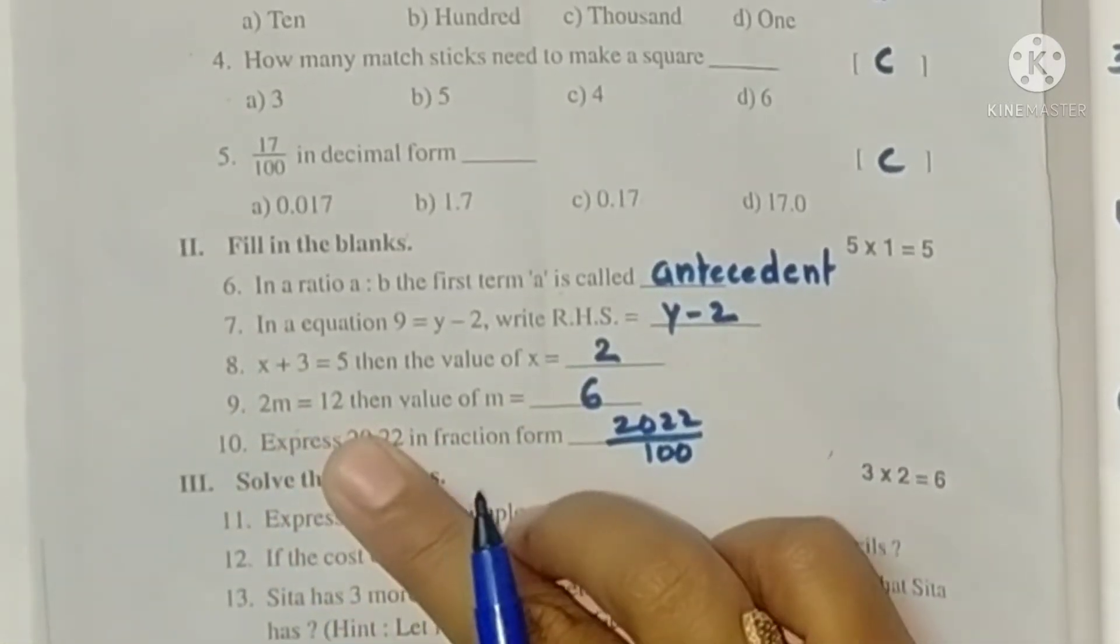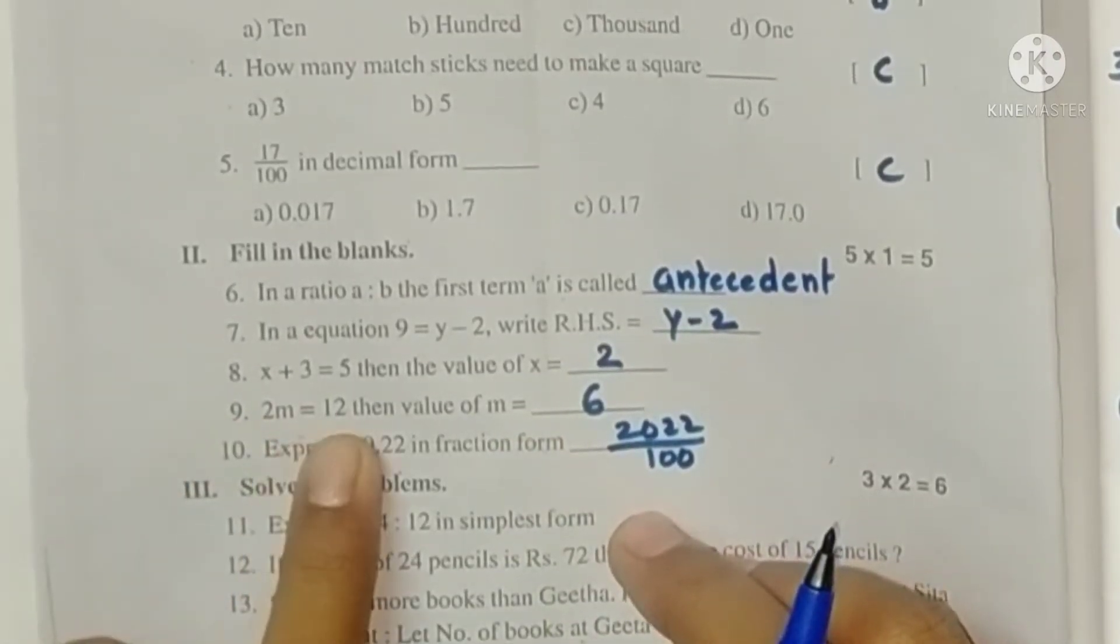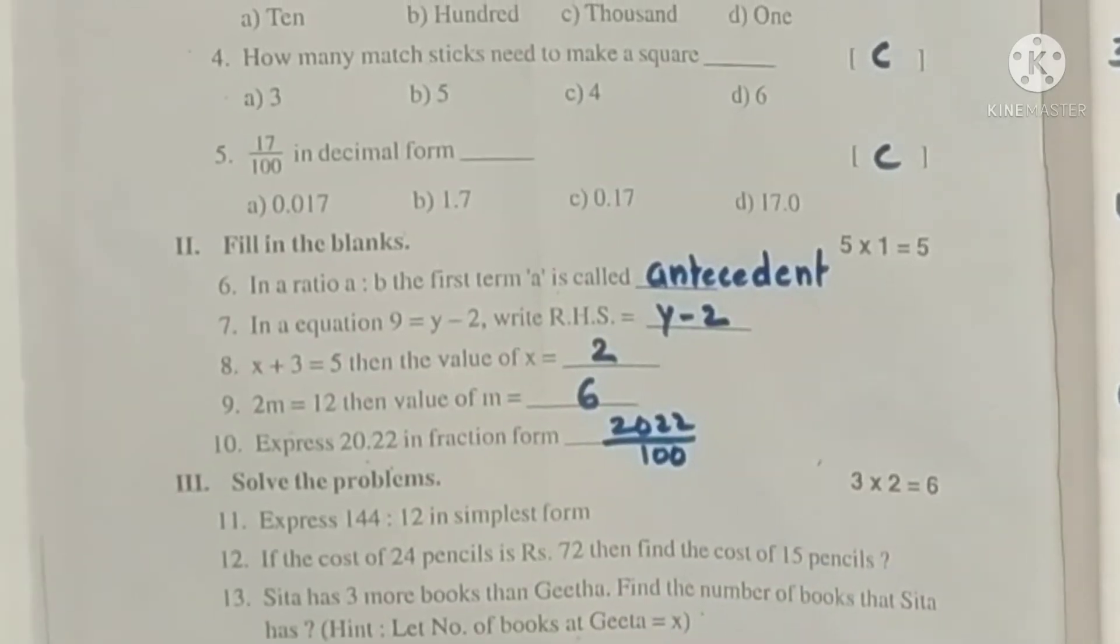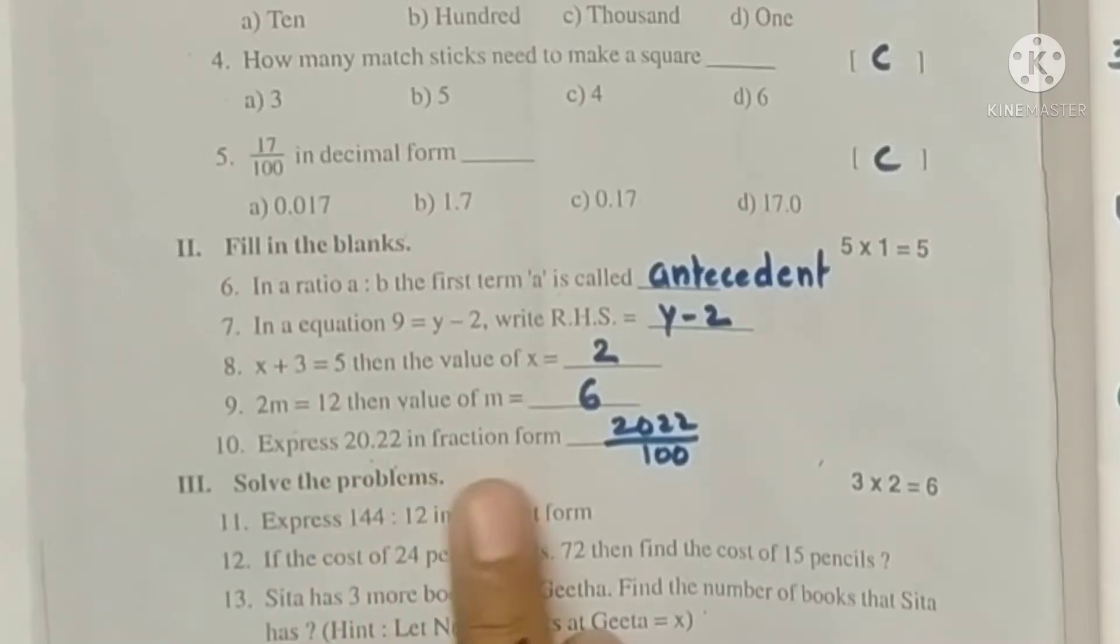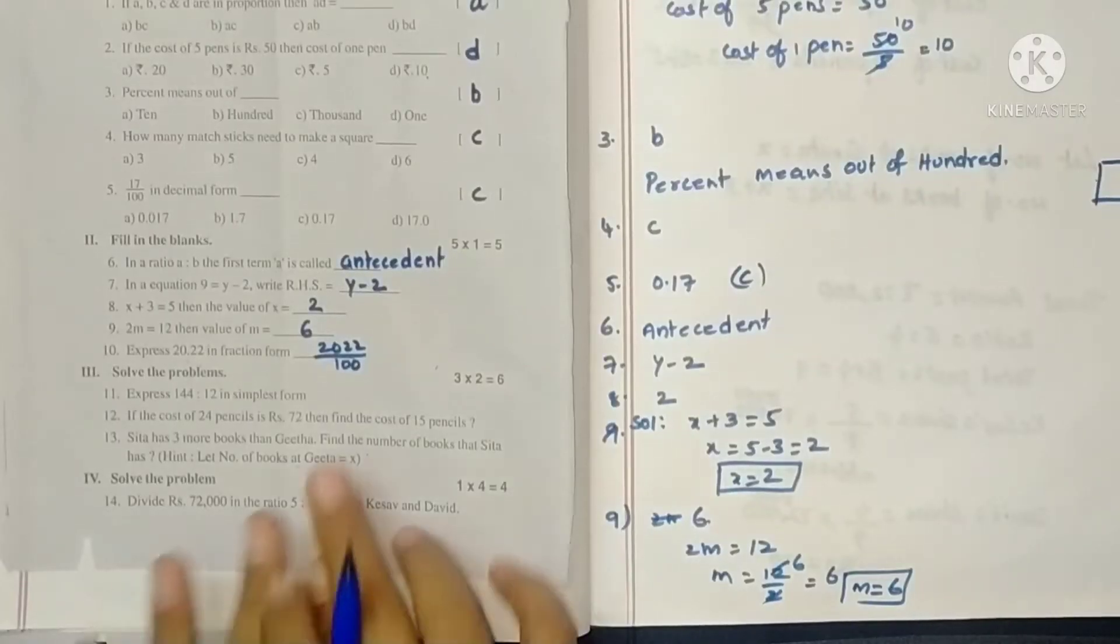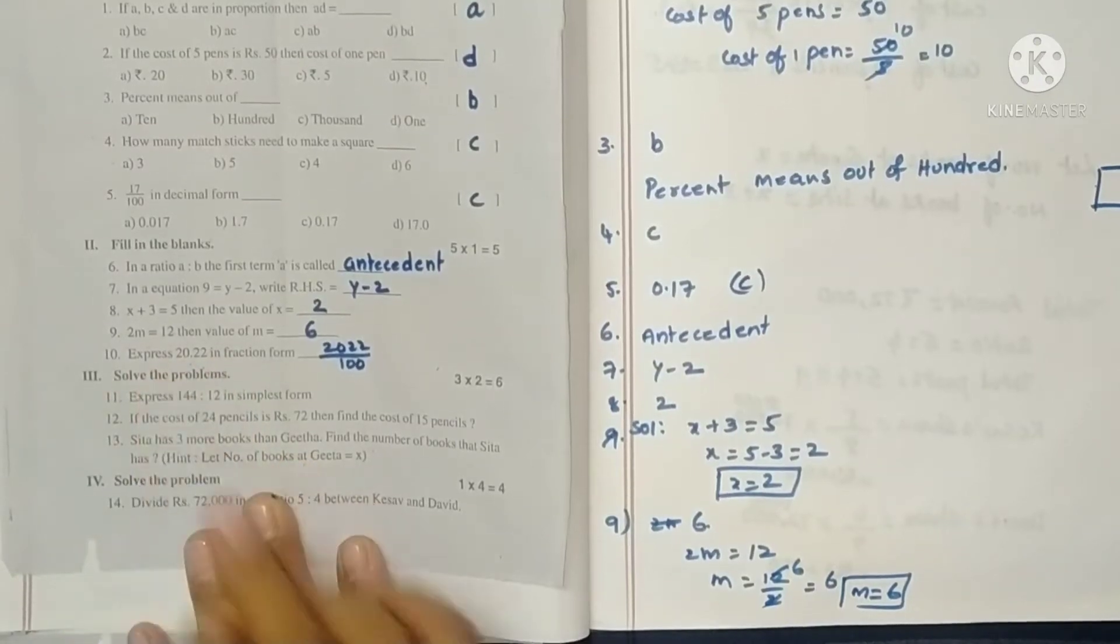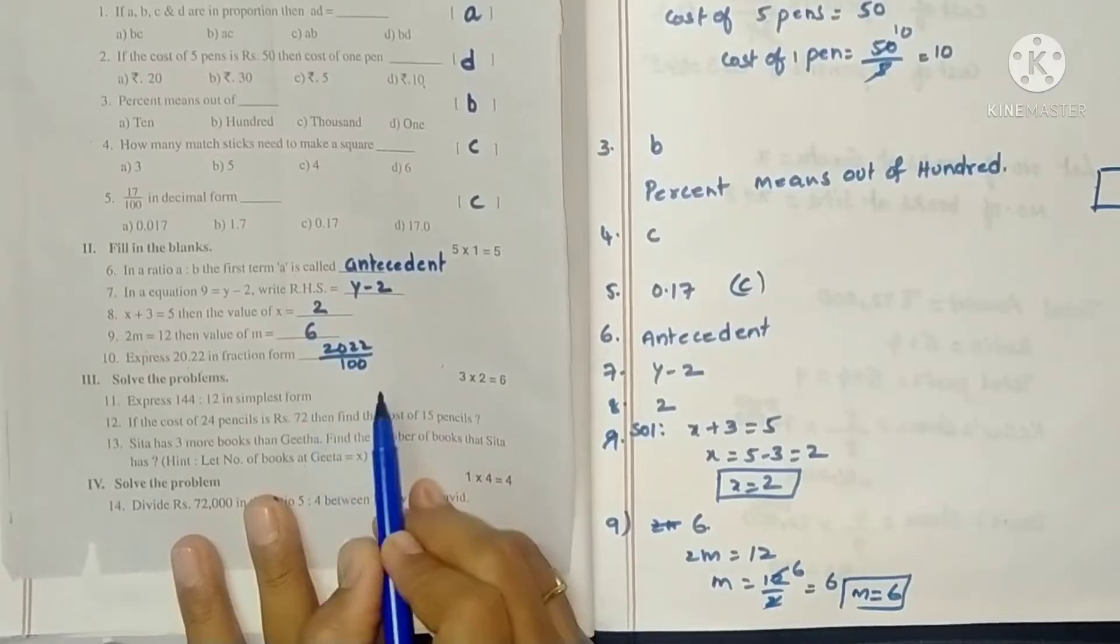2m is equals to 12, the value of m. 2 multiplied by what number gives 12? 2 sixes are 12, so 6. Next, express 20.22 in fraction form. Point after that two digits means denominator has two zeros. So 2022 by 100.